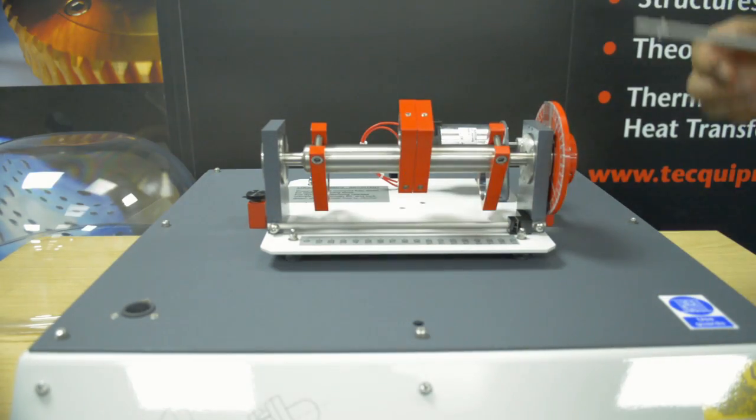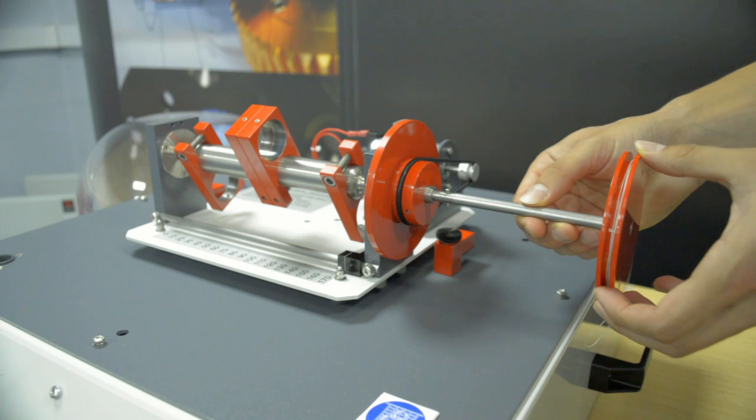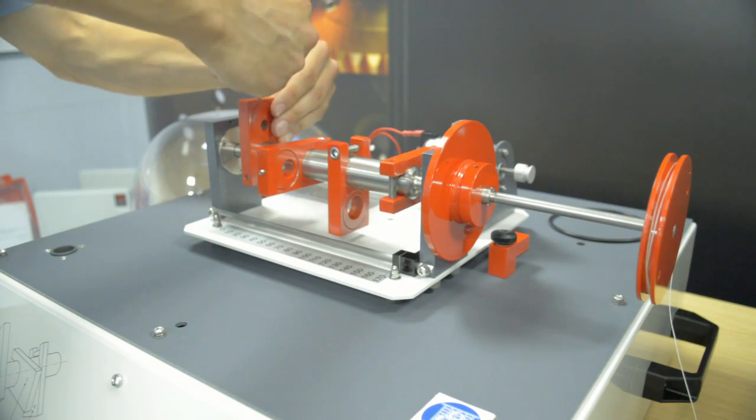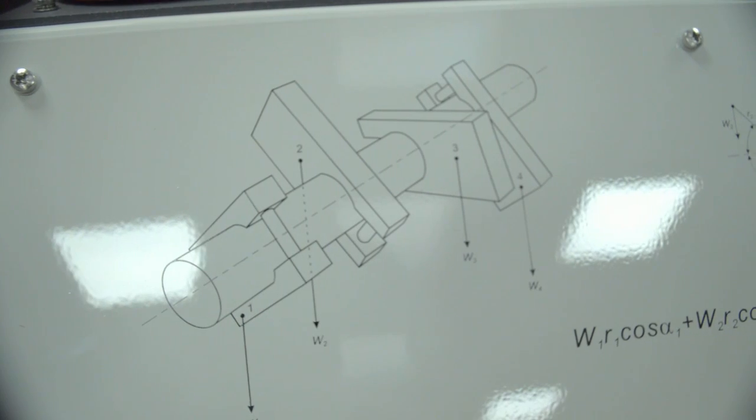Students fit an extension shaft and pulley to the end of the balance shaft. They then add weights to the pulley to measure accurately the moment of each balance block.